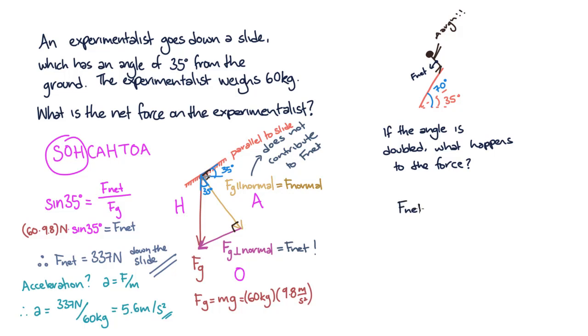We need to substitute the new value into the equation we derived to see the effect. Putting this in, we find that the net force is equal to mg times sine of 70 degrees, which is 553 newtons.